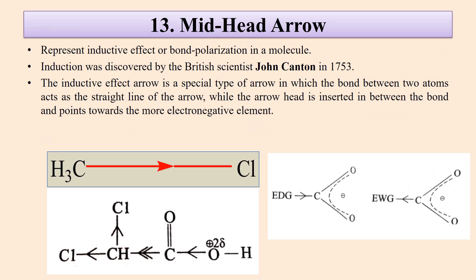Then there is the mid-head arrow, which represents the inductive effect or bond polarization in a molecule. It is a special type of arrow in which the bond between two atoms acts as the straight line of the arrow. Here it shows that electron density is shifted from a methyl group to the chlorine, chlorine being highly electronegative. The mid-head arrow shows the movement of electrons — from an electron-donating group to an electron-withdrawing group. Sometimes two heads are used in mid-head arrows, showing a stronger pull compared to a single-headed inductive effect arrow.